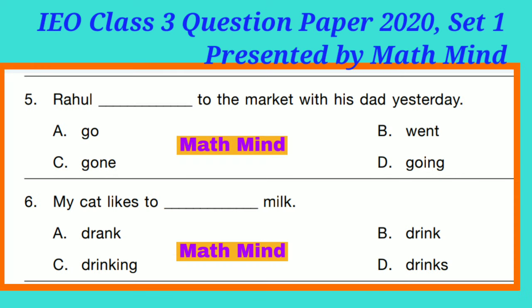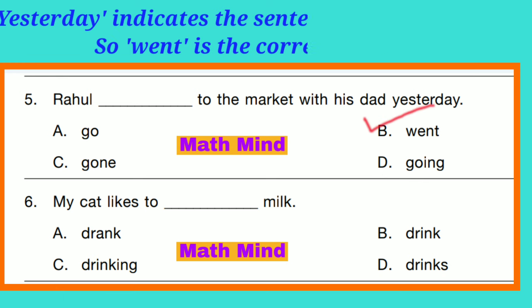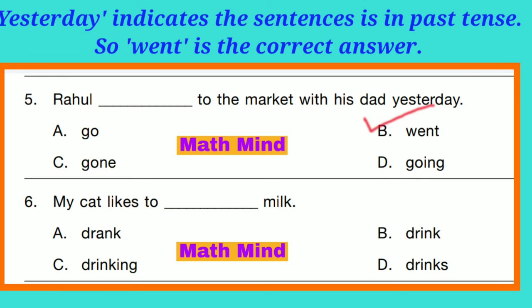Question 5: 'Rahul dashed to the market with his dad yesterday.' Correct answer is B: 'Rahul went to the market.' The sentence is in past tense because 'yesterday' is mentioned, so option B is correct. 'Went' — go, went, gone — 'went' is the past tense form.